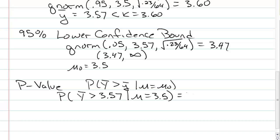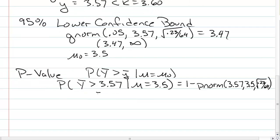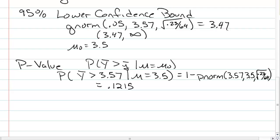We are going to use in R the pnorm command, and that gives us a value of 0.1215. So the probability, if the null were true, of getting a sample GPA of 3.57 is about 12.15%.